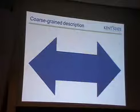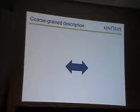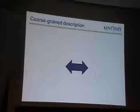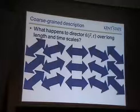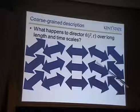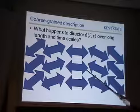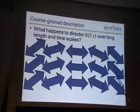Now we want to zoom out even a little bit more — it's like in Google Earth, where you start with a snowball and you can zoom out and see all of Africa. So here in our coarse-grained description, we want to ask what happens to the director over long length and time scales. Over long length scales, there are a lot of regions with different orientational distributions, characterized by different directors in different positions.